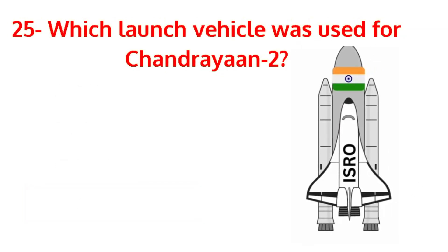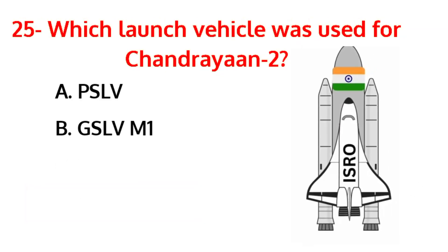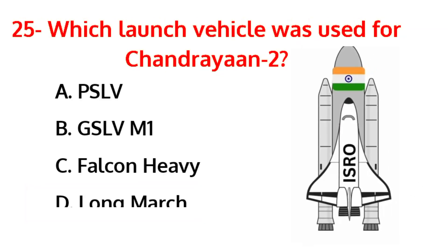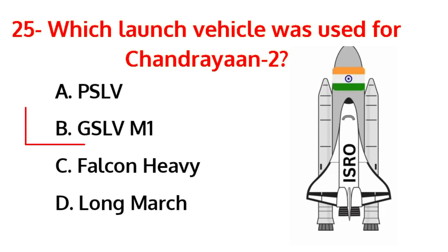Which launch vehicle was used for Chandrayaan-2? The correct answer is option B, GSLV-MK1.